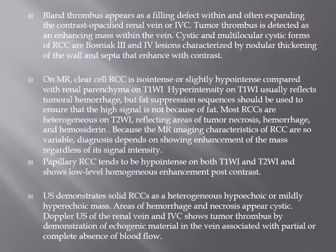Detection of stranding in the perirenal fat is important as it changes treatment strategy, particularly differentiating stage 1 from stage 2. Detection of thrombus within the inferior vena cava is important to identify malignant thrombus. Cystic and multilocular forms of renal cell carcinoma are Bosniak 3 or 4 lesions, characterized by nodular thickening of the wall and septa that enhance with contrast. On MRI, renal cell carcinoma is isointense or slightly hypointense compared to renal parenchyma on T1, and heterogeneous on T2 reflecting necrosis, hemorrhage, and hemosiderin.